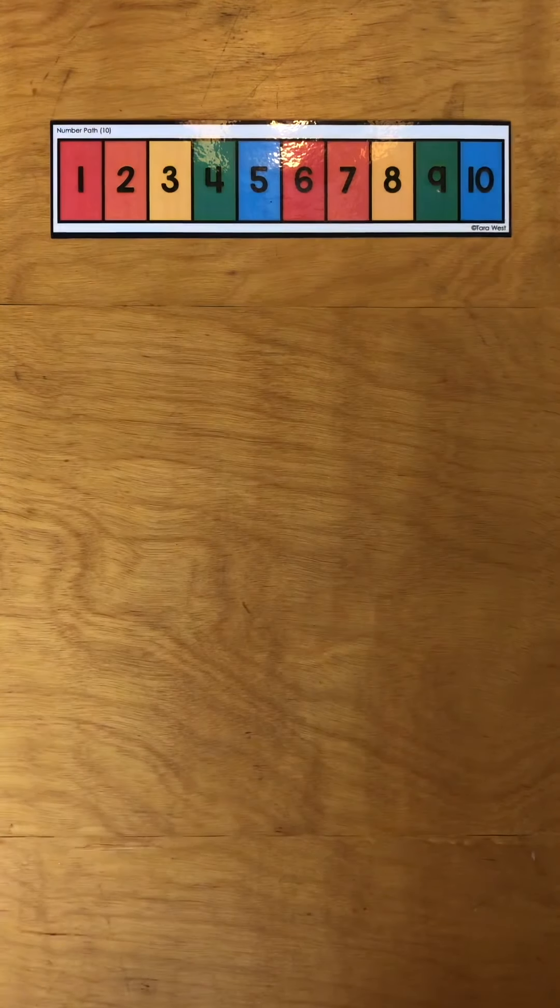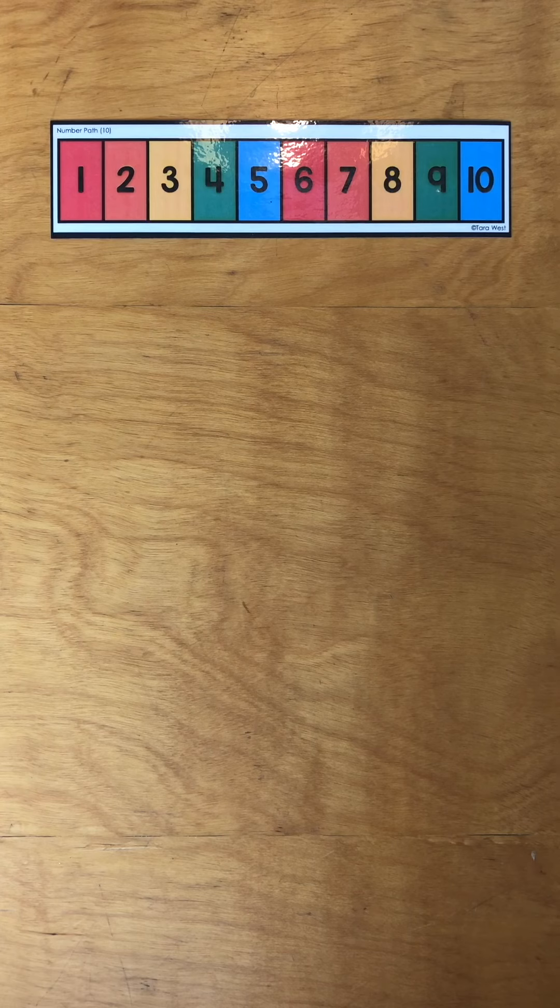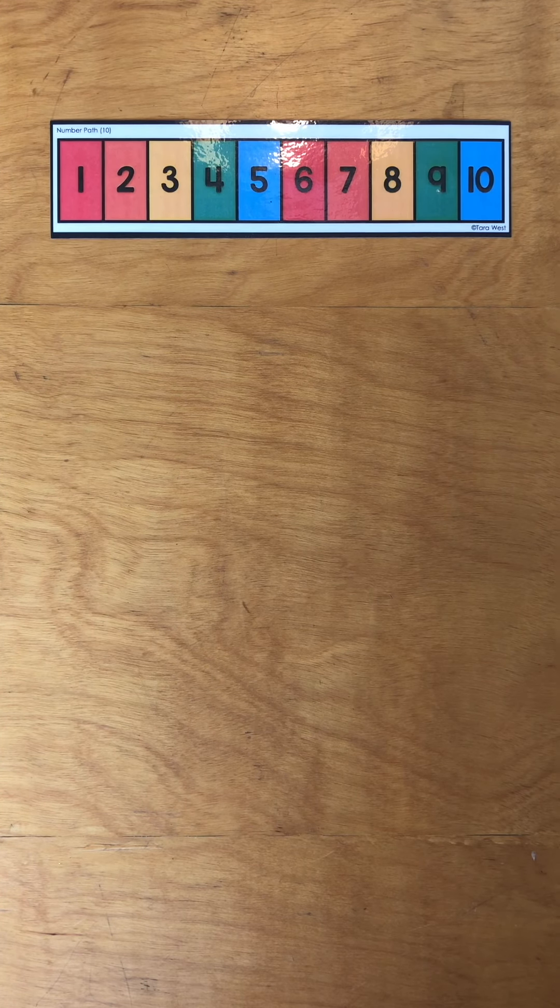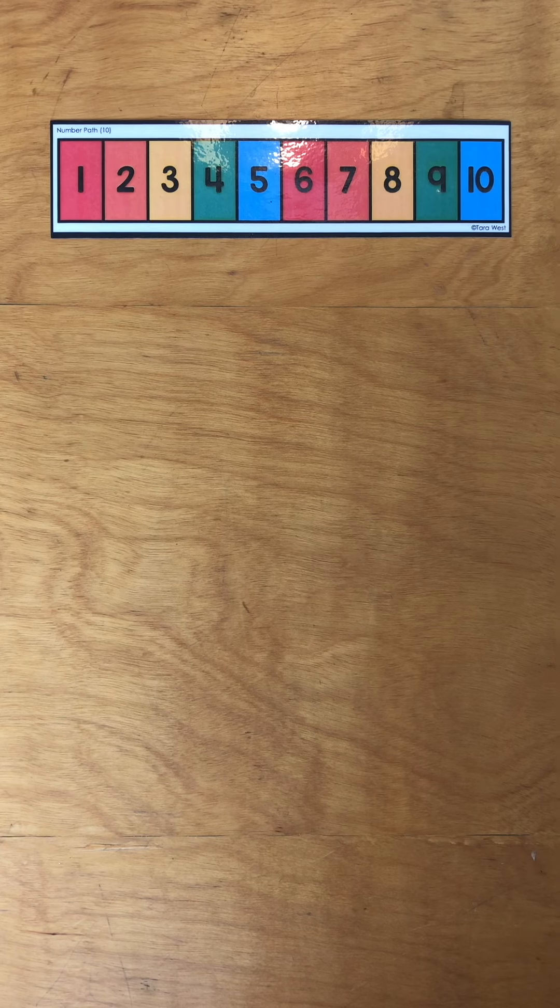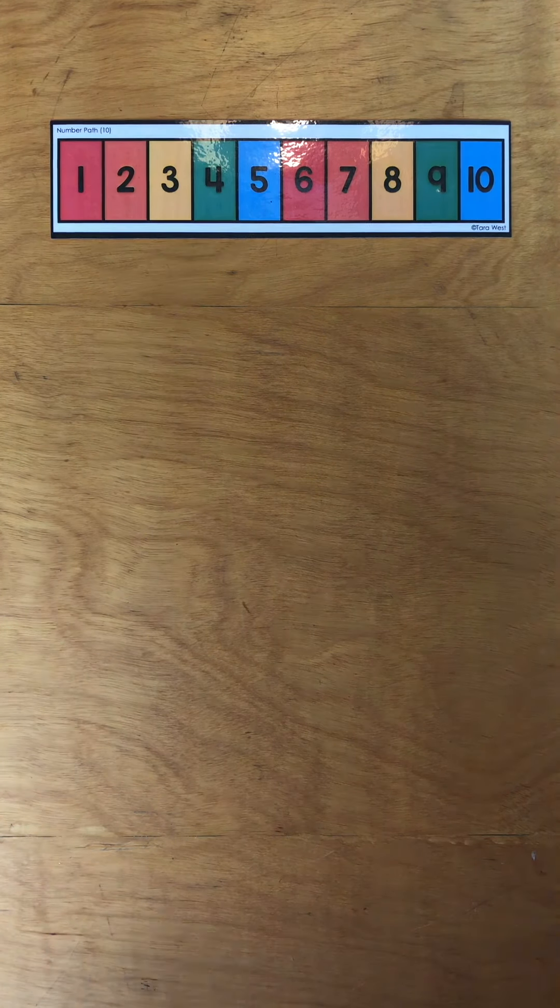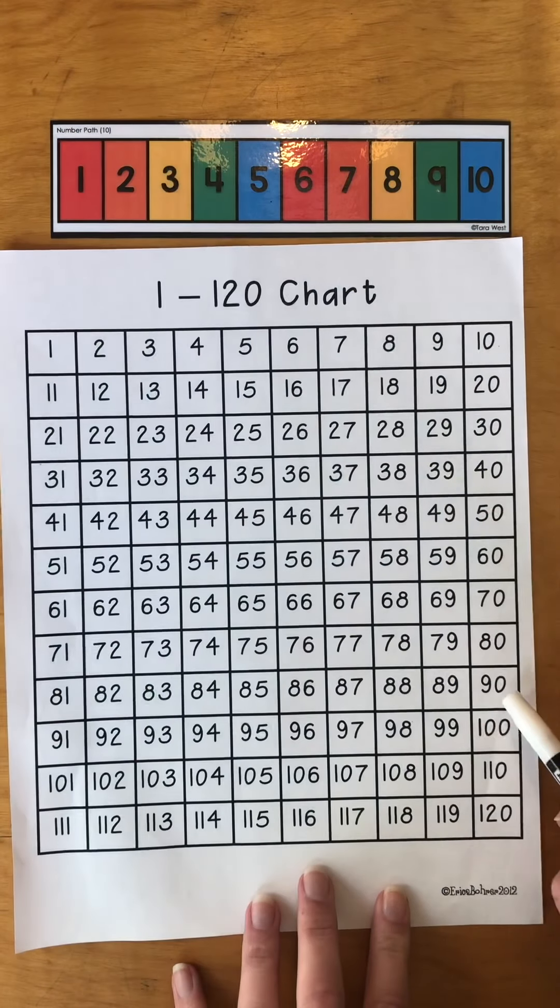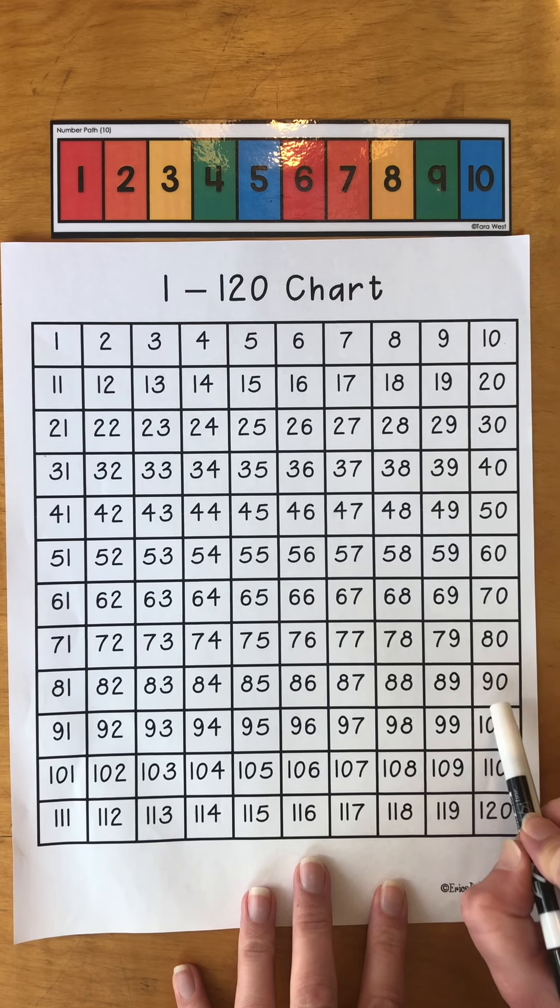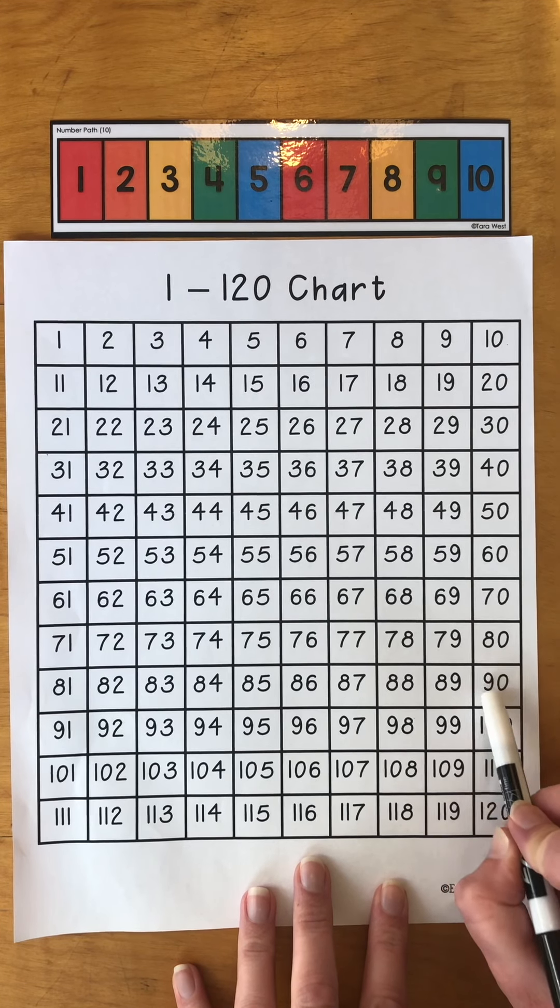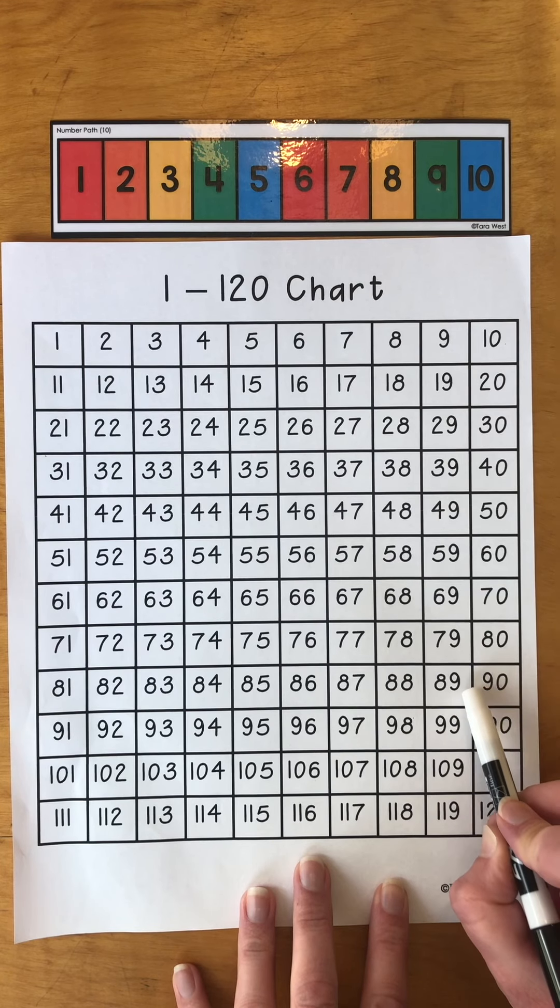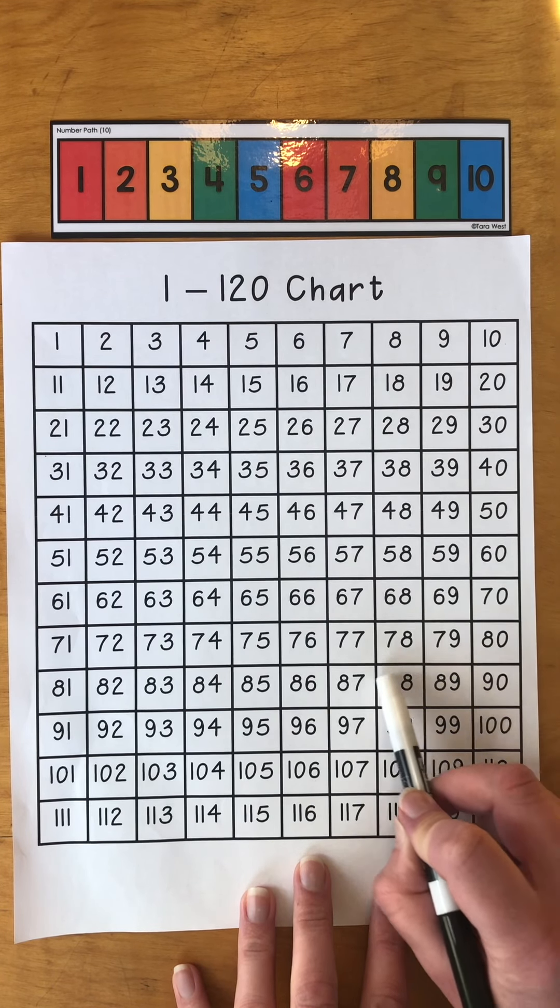Let's do another one in the tens. Let's say what is one less than 90? All right. Here's 90. One less is 89. 90 and 89 are side by side. We had to change that zero to a nine and move back into the 80s decade.